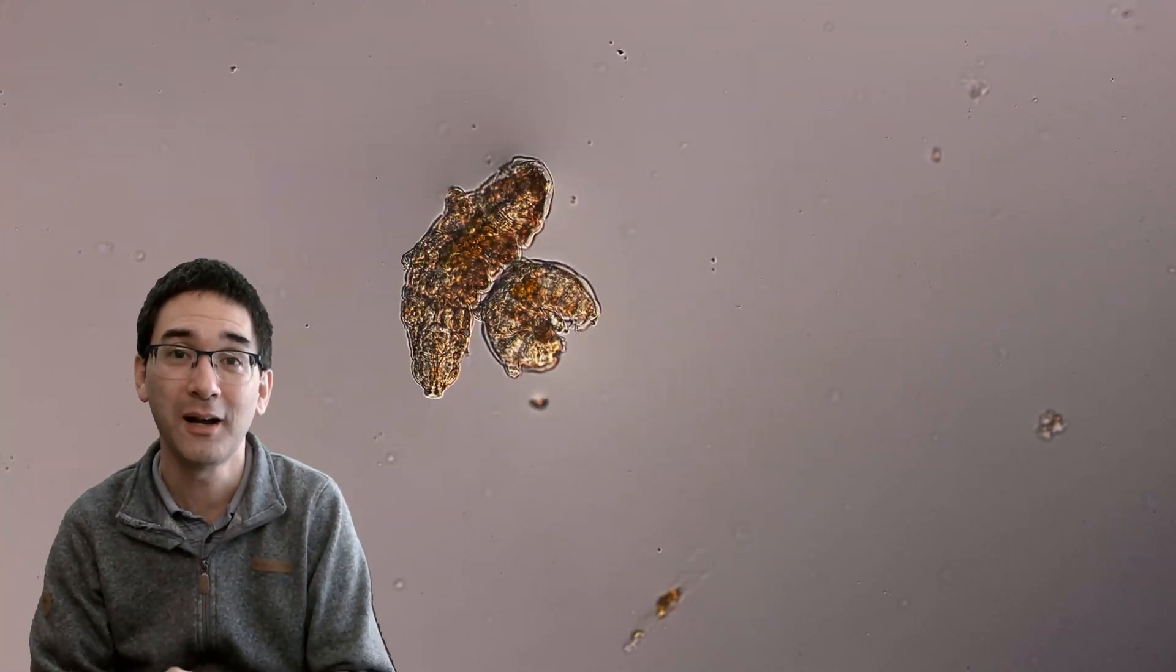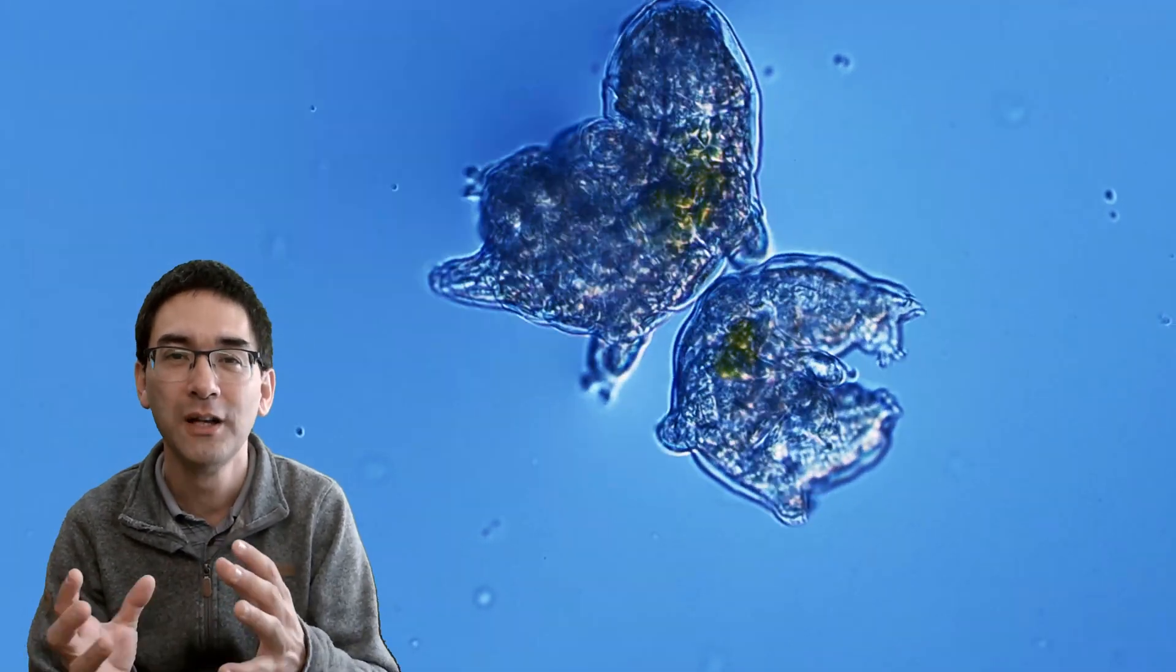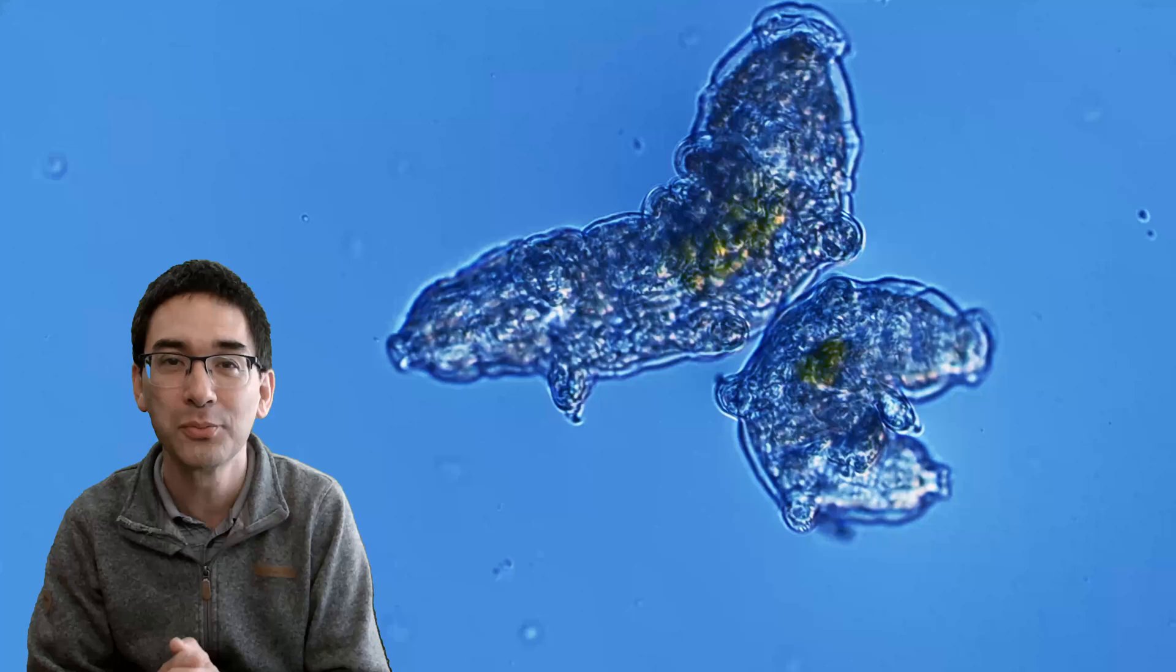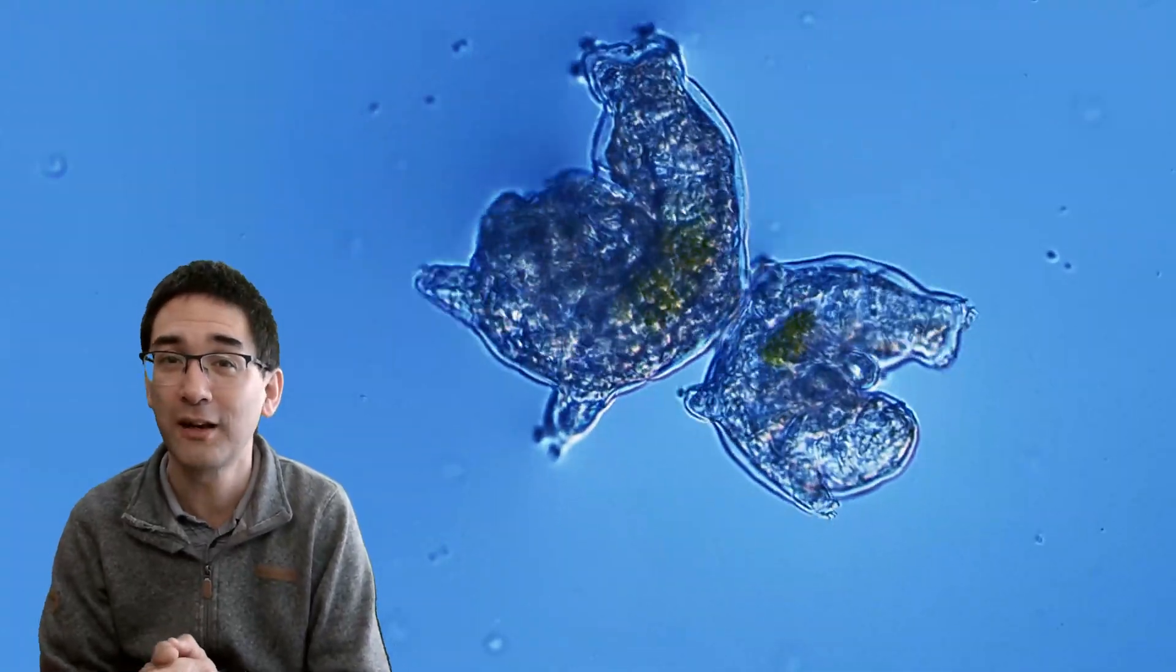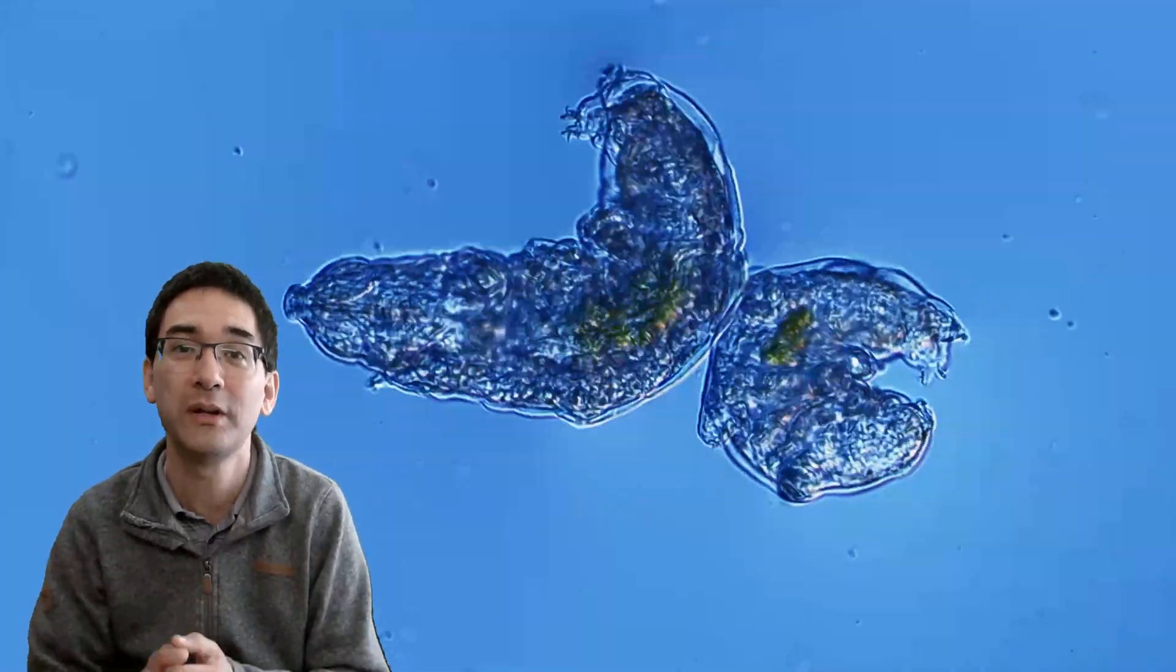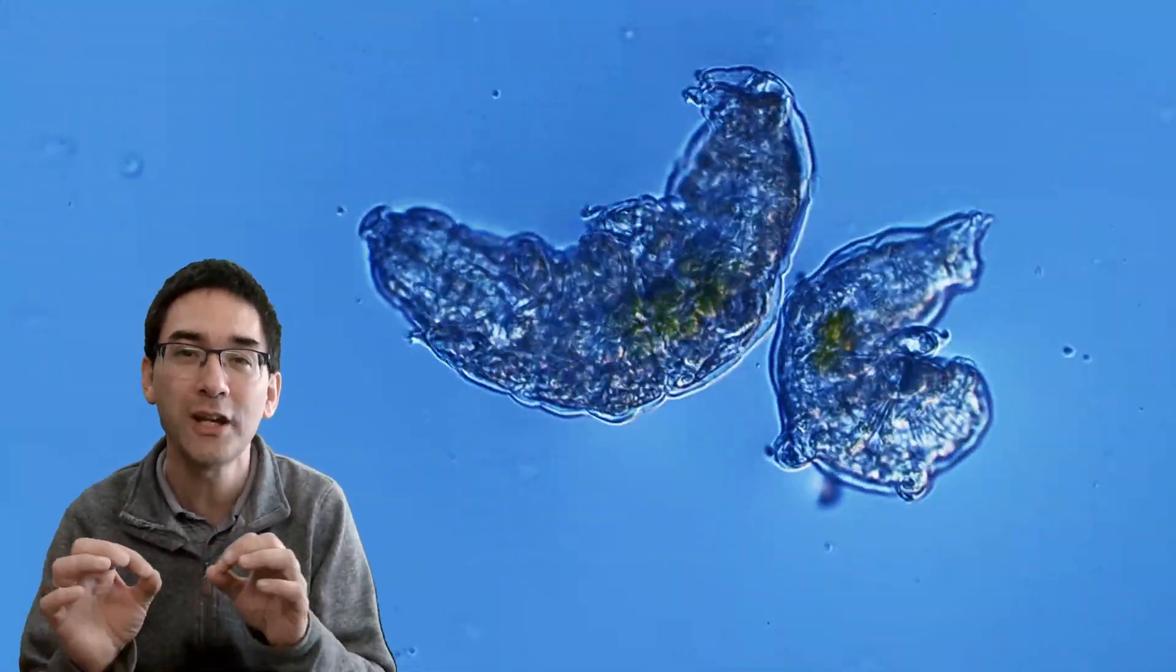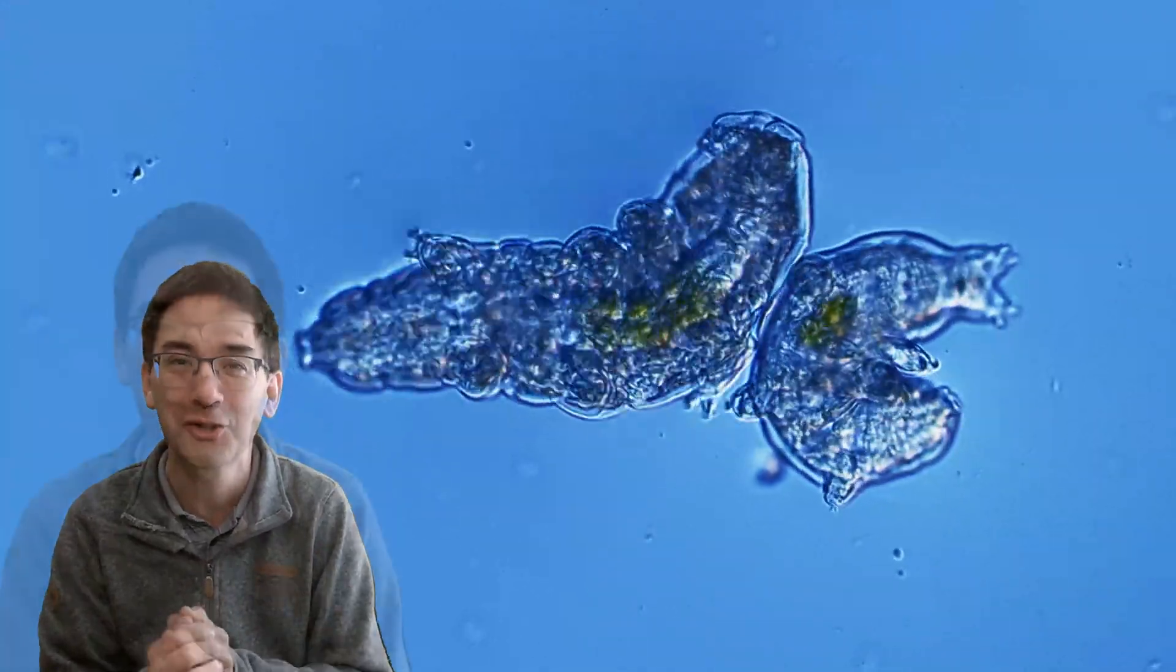And people keep on asking me, well, how do you actually do it? How do you change the colors around so nicely? And how do you make sure that the quality is so good? For example, this one over here is blue. Well, I'm not always using filters, I have to tell you. A lot of the things I'm doing in post-processing. So in the video editing program, I'm able to change the colors around a little bit. And this also makes it a little bit more interesting for you as the viewer to watch.